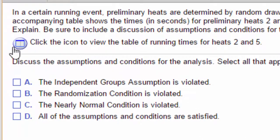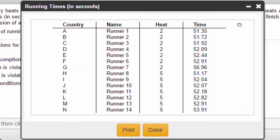Right here, by clicking this, we can get to the table showing us the data. You'll notice we have country, name of runner, heat, and time. For this problem, we are primarily concerned about the heat and the time.